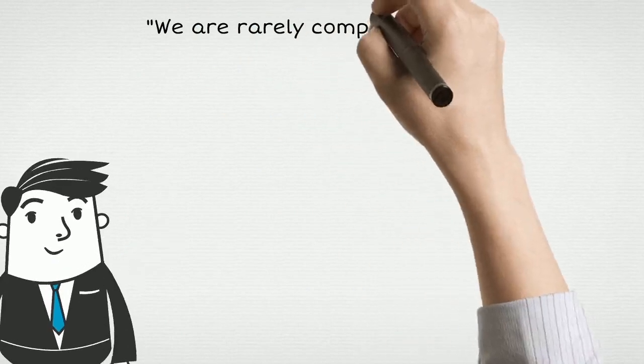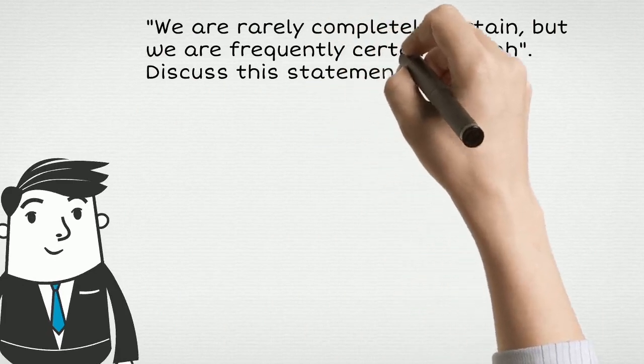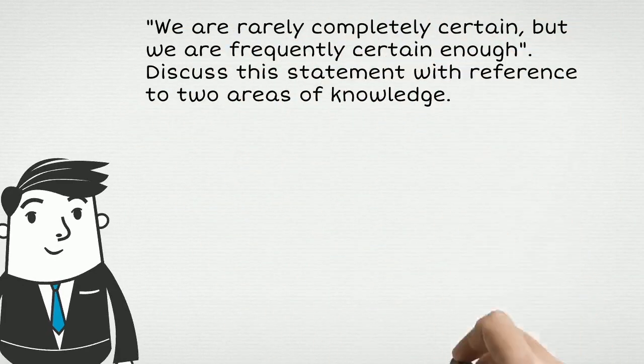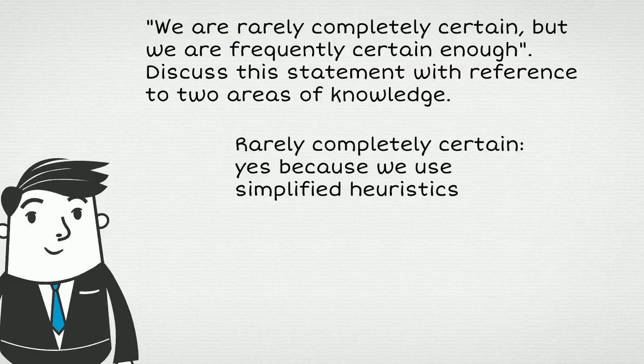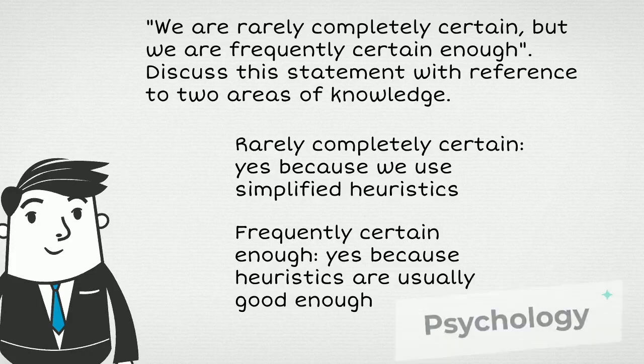So coming back to the essay title, we are rarely completely certain, but we are frequently certain enough. Yes, we are rarely completely certain because we predominantly use heuristics in everything we do and all problems we have to deal with. System 1 and System 2 act sequentially, first the first one, then the second one. And yes, we are frequently certain enough because in most cases, these simplifying decision rules are good enough for us to achieve sufficient accuracy, good enough to carry on. And I have used an example from psychology, a human science, to demonstrate this.